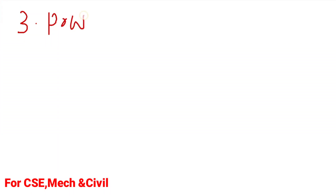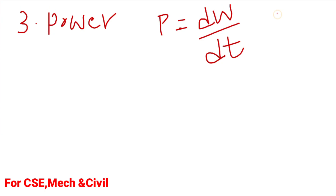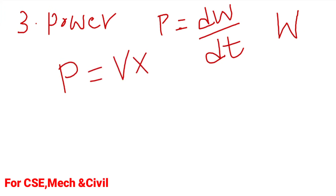Next we define power. After deriving current and voltage, power is the time rate of doing work. Power is denoted by the letter P. If the differential work done is dW with respect to time dt, then power P = dW/dt, measured in watts. Energy is measured in joules. From voltage and current relationships, power is also given by P = V × I — the multiplication of voltage and current in DC circuits.